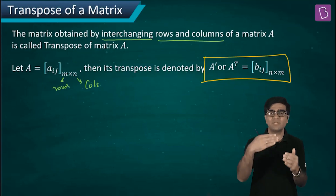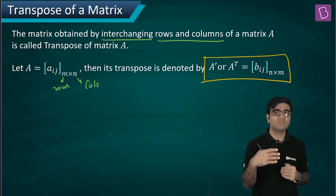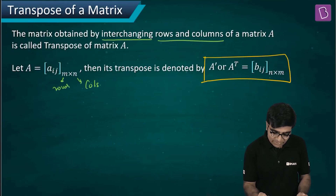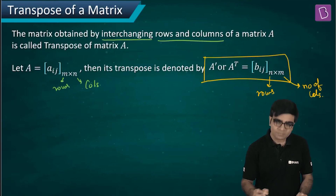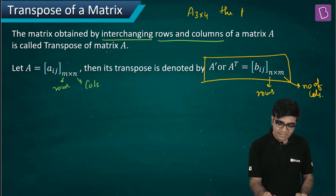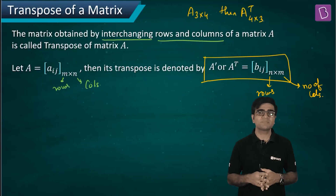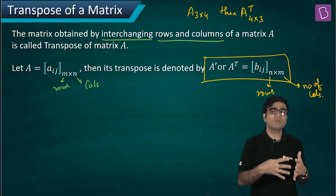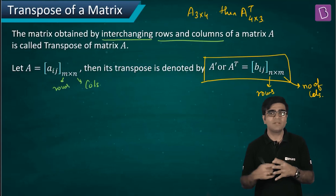A transpose equals bij and the order becomes n cross m. Earlier the number of rows were m, so when you interchange those rows with columns, n becomes the number of rows and m becomes the number of columns. For example, if matrix A is of order three by four, then A transpose will be of order four by three.